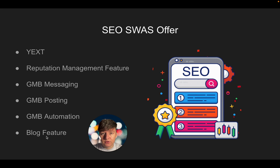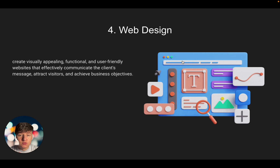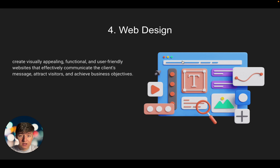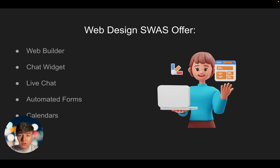The fourth service is website design. With Go High Level you can easily create beautifully designed, fully customized websites for local businesses and charge anywhere from $1,000 to $5,000. However, this is a one-time payment — so it's important to create a SWaaS offer to get the business owner paying every month. On top of the website, your client gets access to the website builder and funnel builder where they can customize their site and access all of Go High Level's website templates.